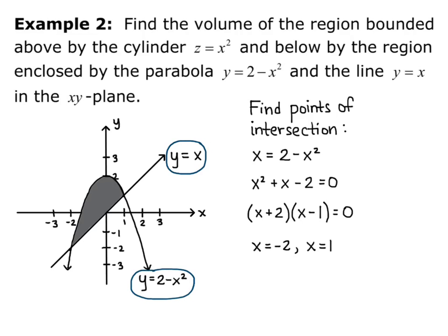So we know that our lower bound for y is the line, y equals x. And the upper bound for y is the parabola, y equals 2 minus x squared. So y goes from y equals x to y equals 2 minus x squared.